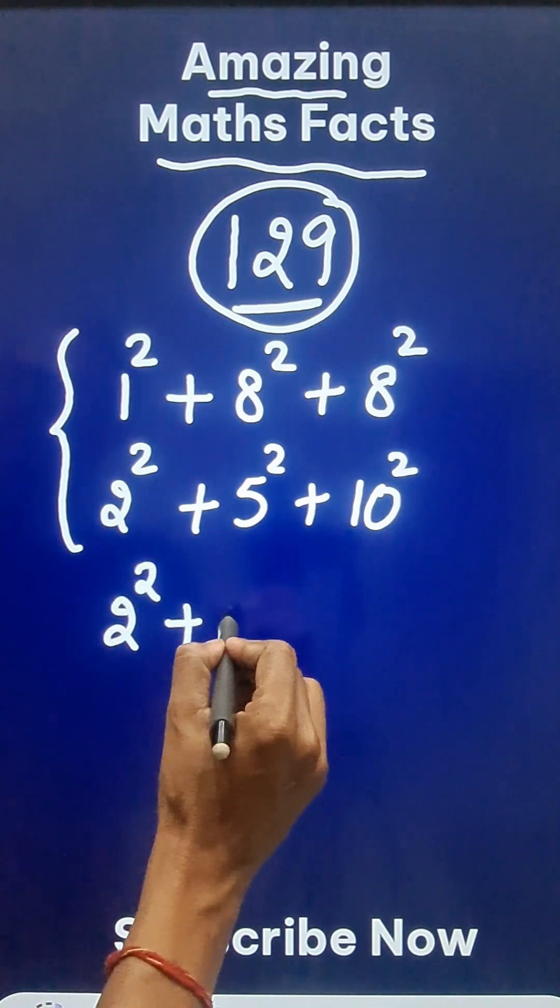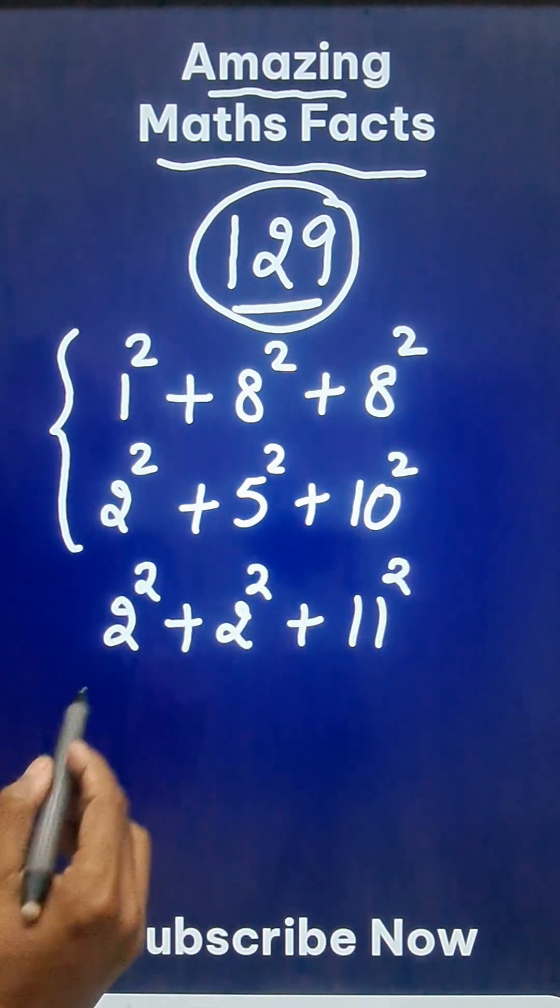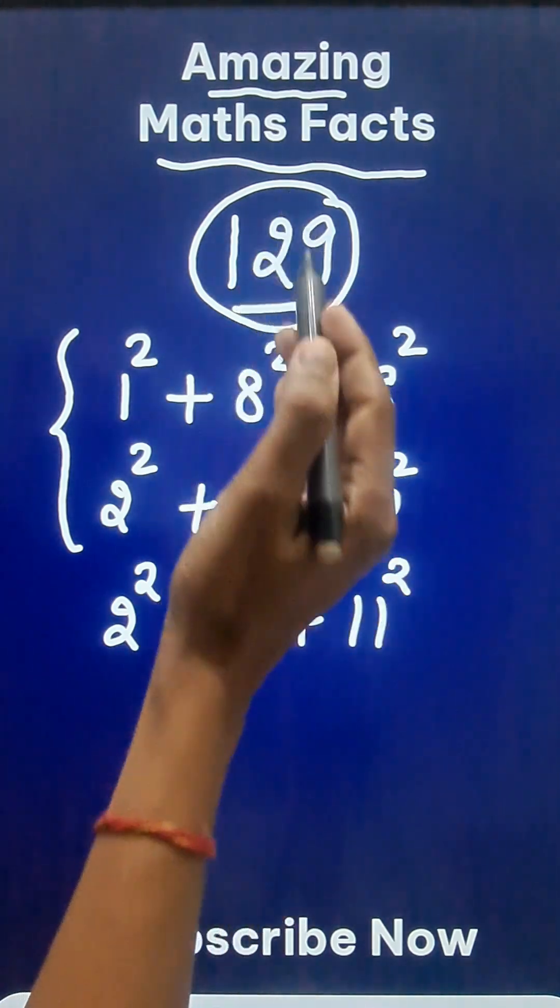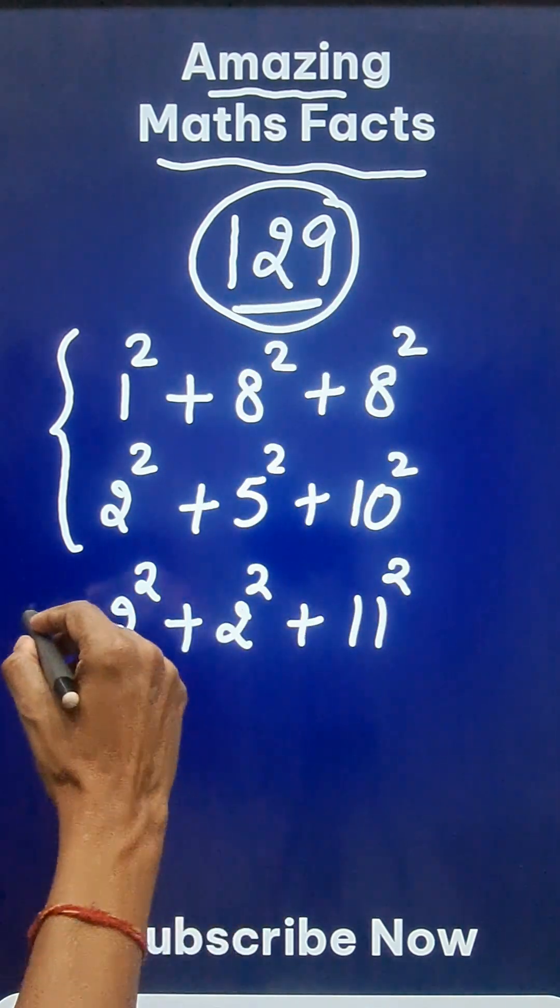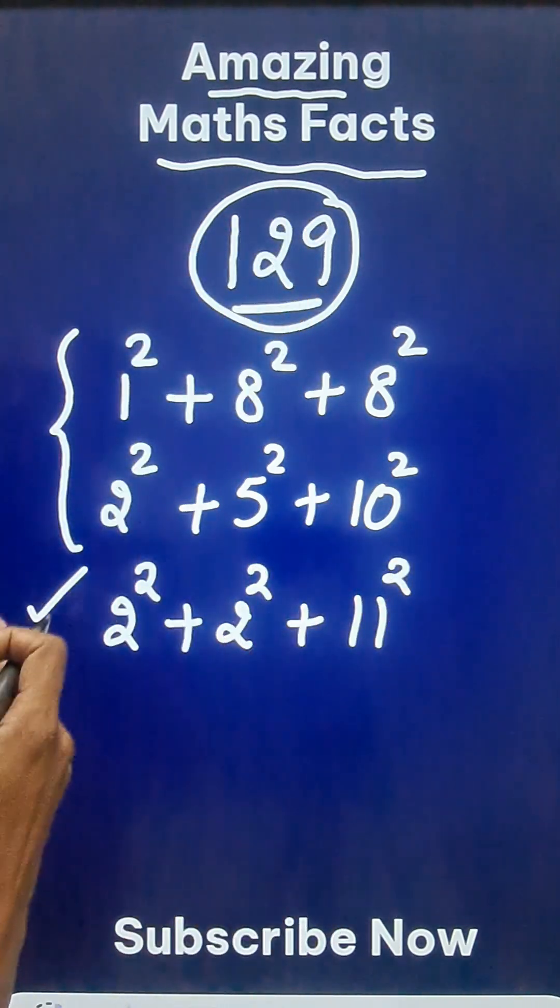Let's see 2 square plus 2 square plus 11 square. Now let's try this. 4 plus 4 plus 121. Is that 129? Of course it is 129. So the third way in which we can express 129 as a sum of the three square numbers.